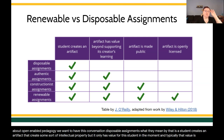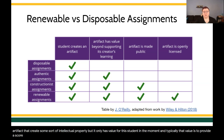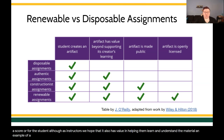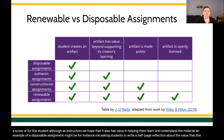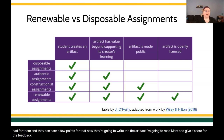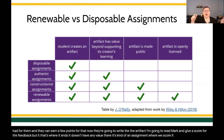What disposable assignments mean is that a student creates an artifact — some sort of intellectual property — but it only has value for the student in the moment. Typically that value is to provide a score for the student, although as instructors we hope it also has value in helping them learn. An example of a disposable assignment might be asking students to write a half-page reflection about the value that this course had for them, earning a few points. The student writes the artifact, I read, mark, and give a score for the feedback. But that's where it ends. It doesn't have any value beyond that. We score it, assign the credit, shred it, and we're done.